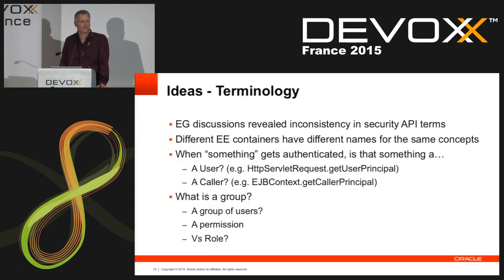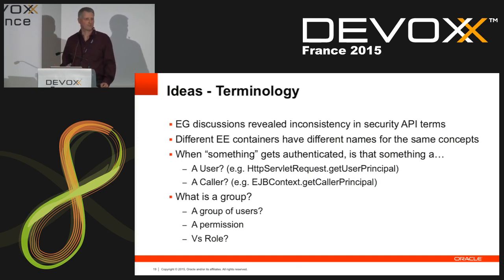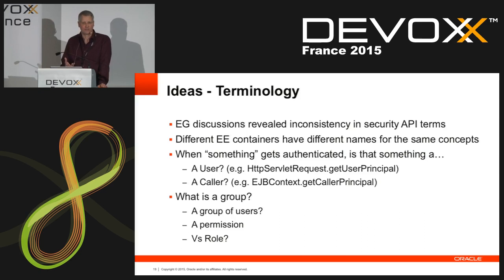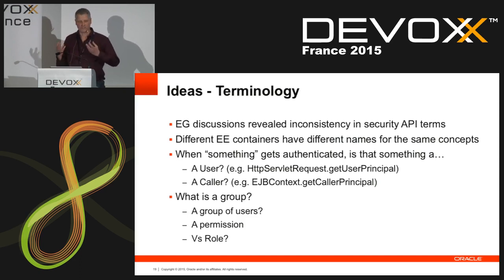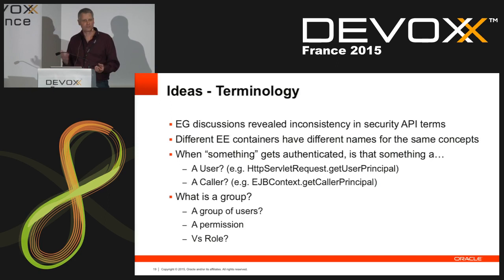So, terminology. In the first week of our expert group, we all realized that we had different words for the same thing. There were also different names for the same thing in different containers. For instance, when something gets authenticated, what is that something? In the servlet API, it's 'HTTP servlet request get user principal' — so it's a user. In the EJB container, you use 'EJB context get caller principal' — so it's a caller. There's also a lot of discussion about what a 'group' is. And what is the thing where identities are stored? It's called: security provider, a realm, an auth repository, an auth store, a login module, an identity manager, an authenticator, an authentication provider, or an identity provider.